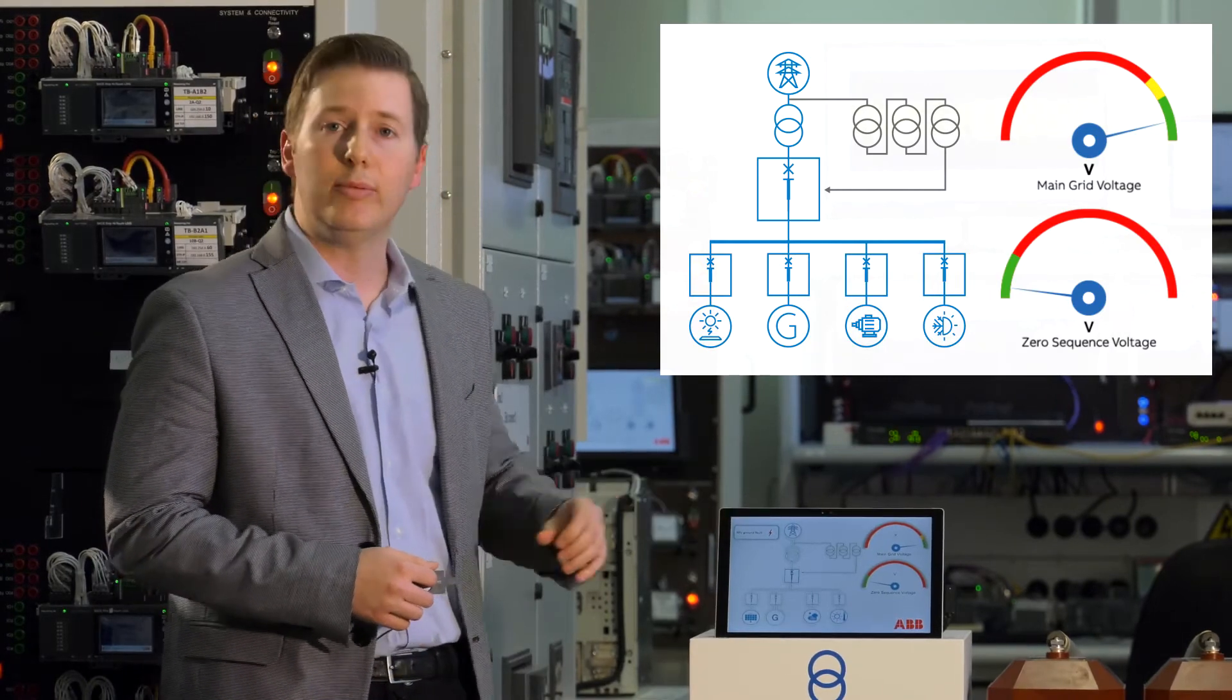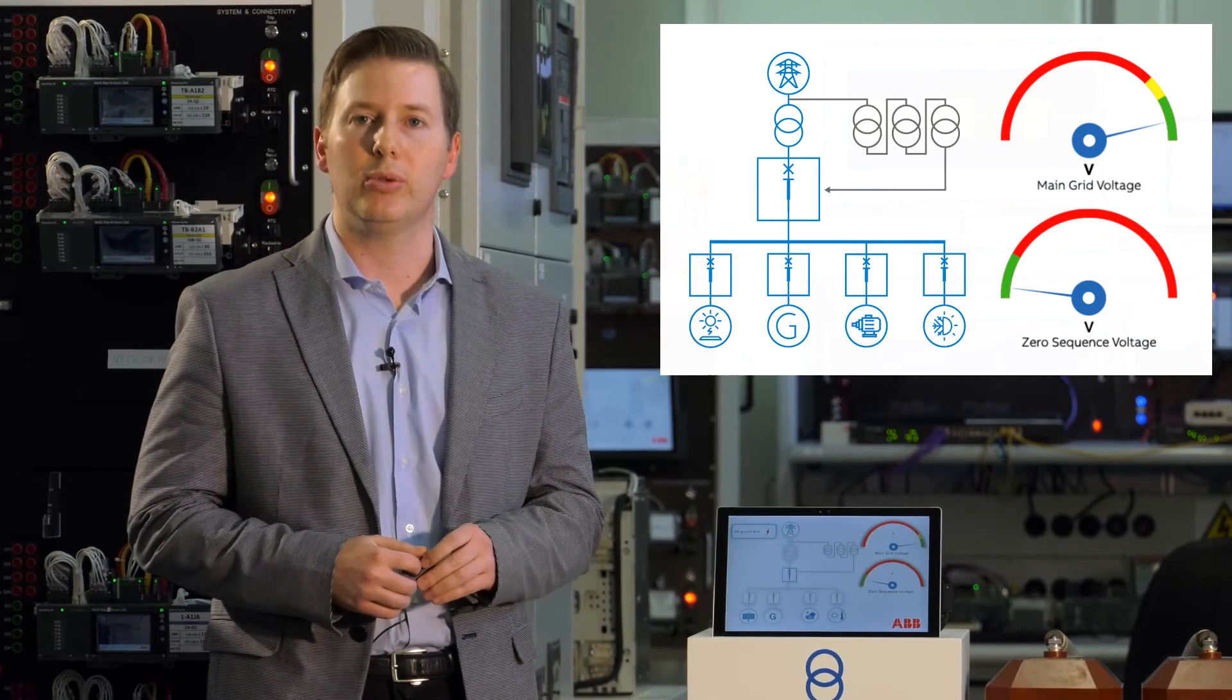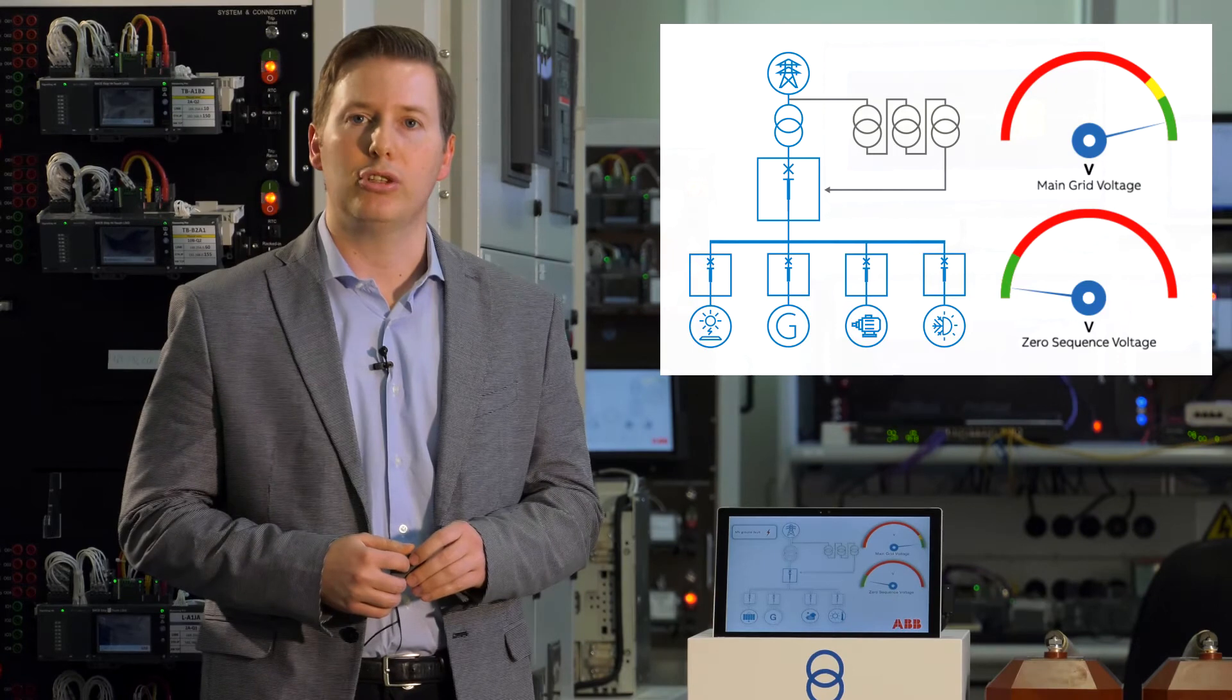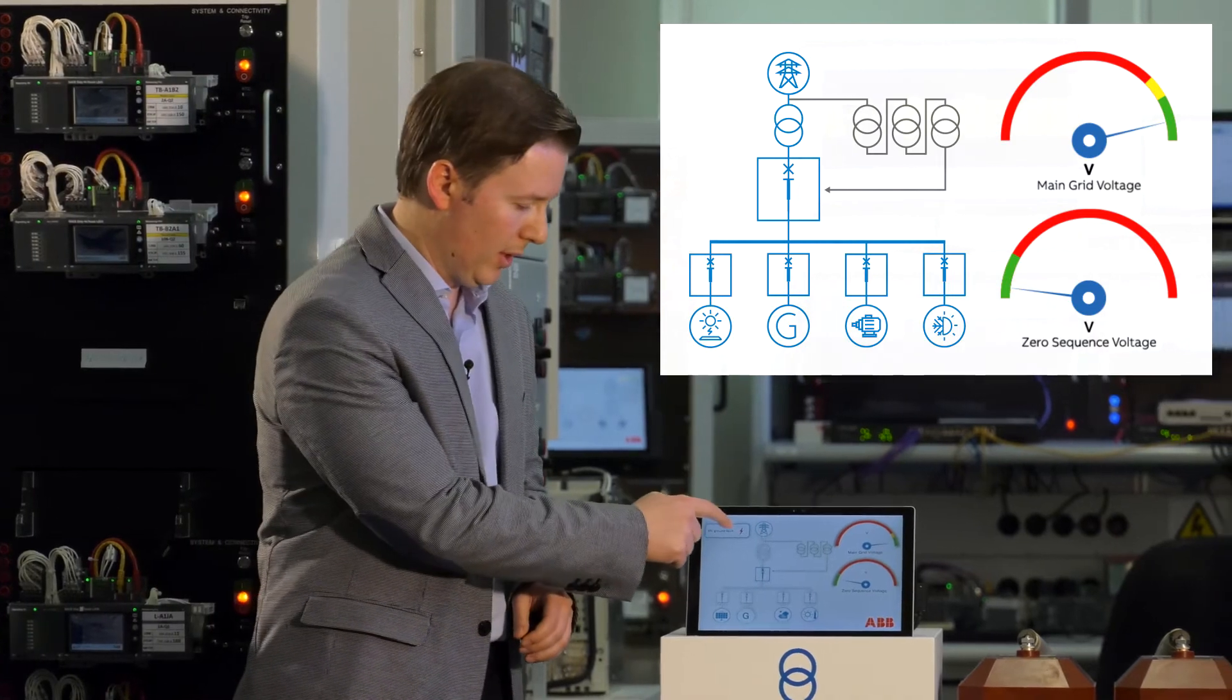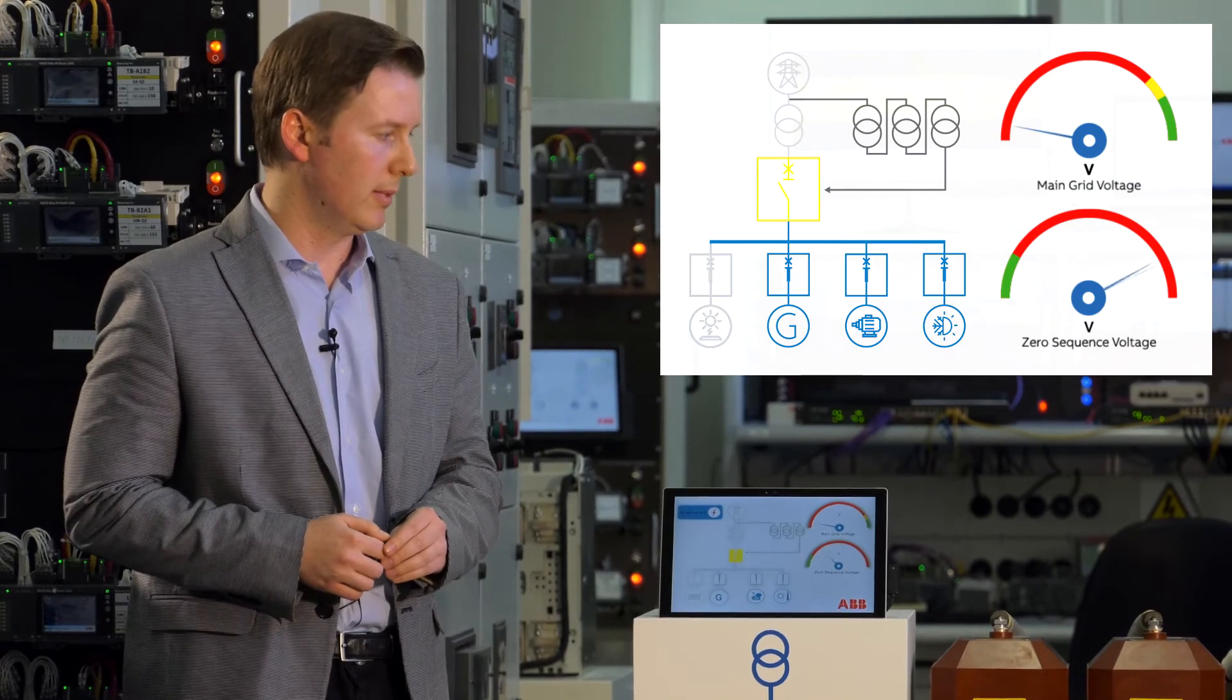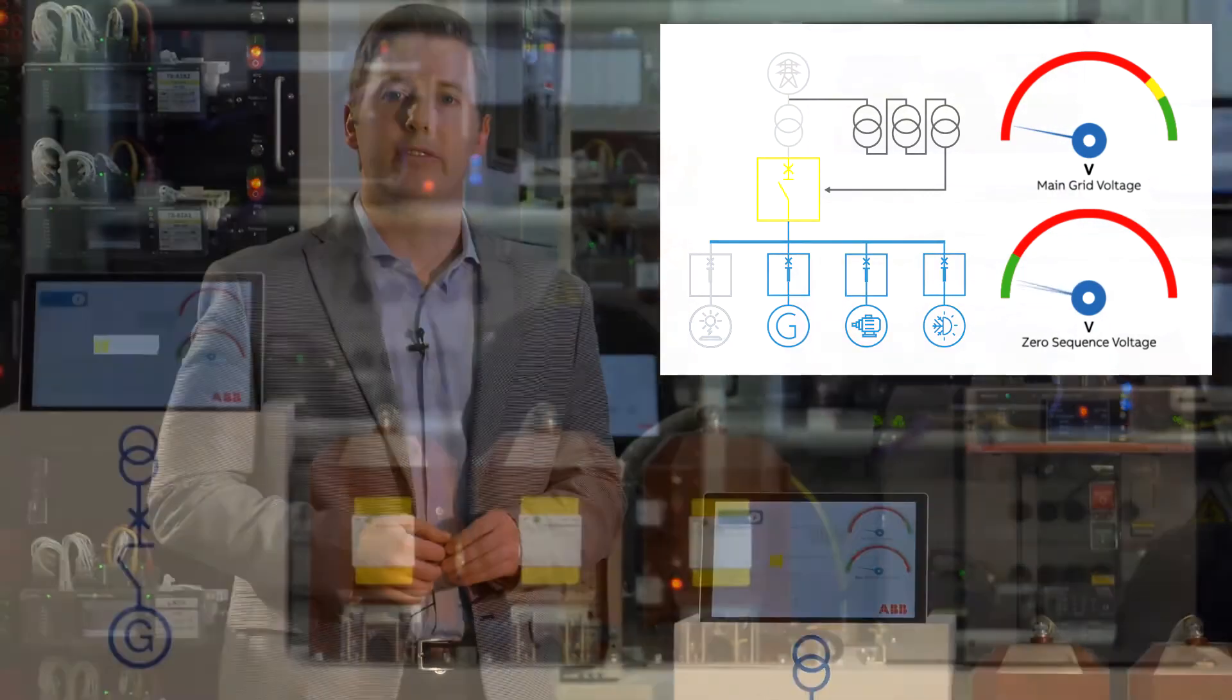If we simulate a medium voltage ground fault thanks to the generation of zero sequence voltage signal, the circuit breaker changes automatically the frequency threshold and trips due to under-frequency. We generate the ground fault. And the circuit breaker has tripped due to under-frequency.